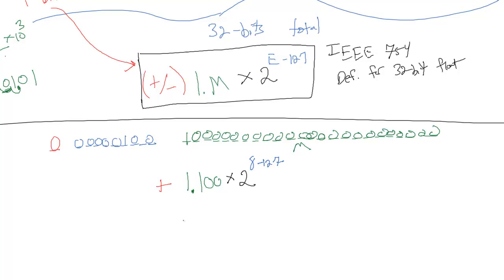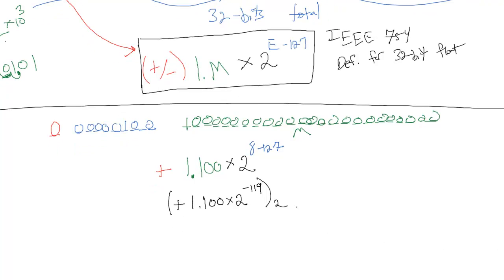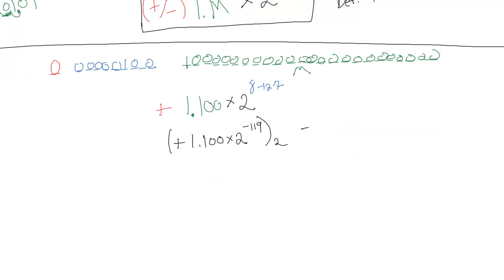It's going to be times 2 to our exponent. The exponent field holds 8, so it's 8 minus 127. Let's write that out: that's positive 1.100 times 2 to the power of negative 119 — because 8 minus 127 is negative 119. And that's in base 2.